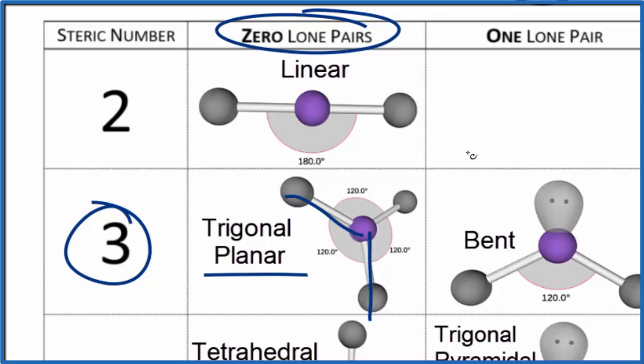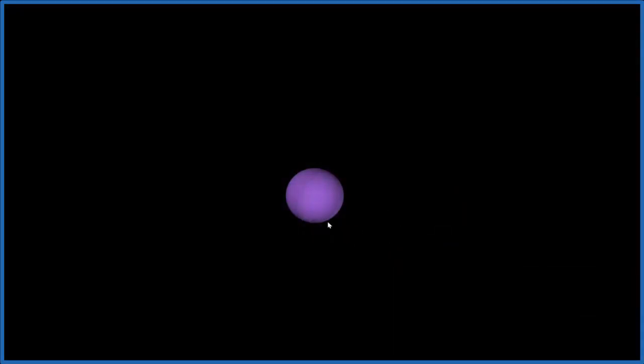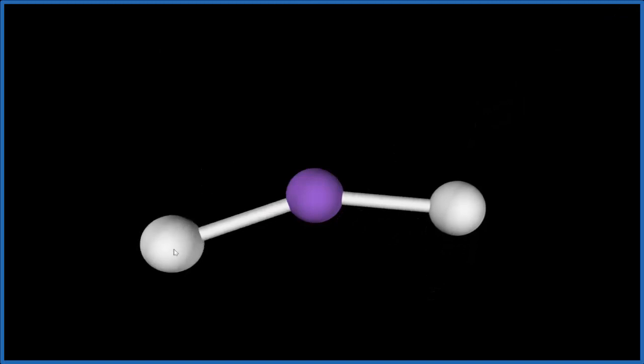We could also visualize the structure. Let's do that. So the purple, that'll be the carbon atom. Let's add two of those hydrogen atoms, one, two. You see they spread out to be as far away as they can from each other.